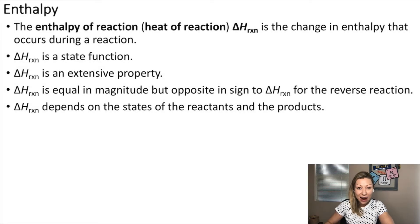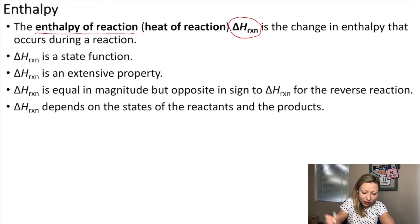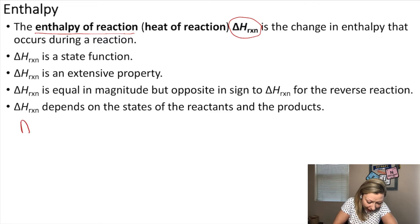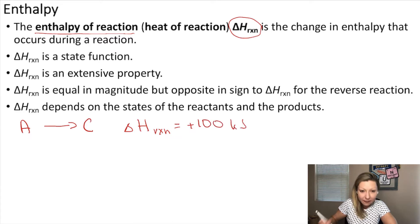Hello guys. Let's talk a little bit more about enthalpy, specifically about the enthalpy of the reaction or delta H of the reaction, which is the change in enthalpy that occurs during a reaction. So if I have a sample reaction where A is my reactant forming C, the product, the delta H of this reaction can be plus 100 kilojoules.